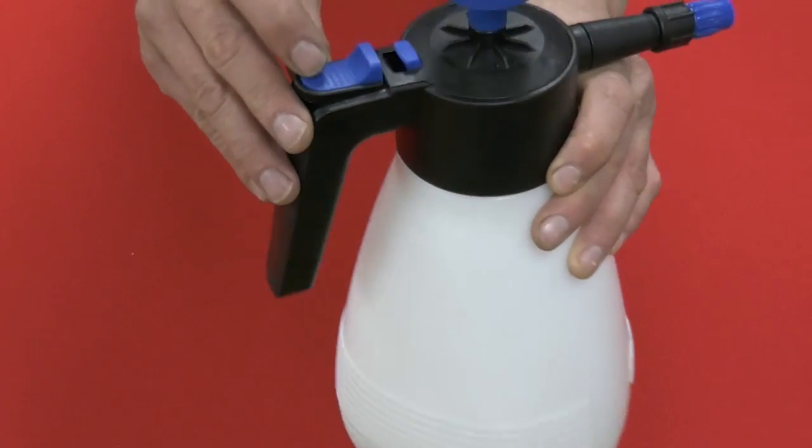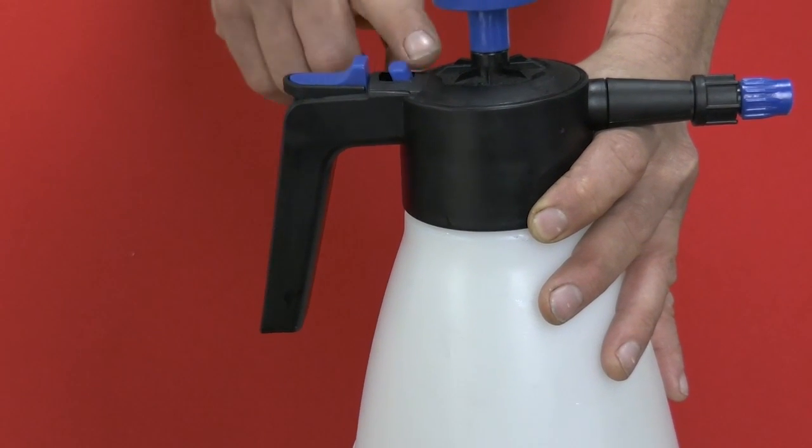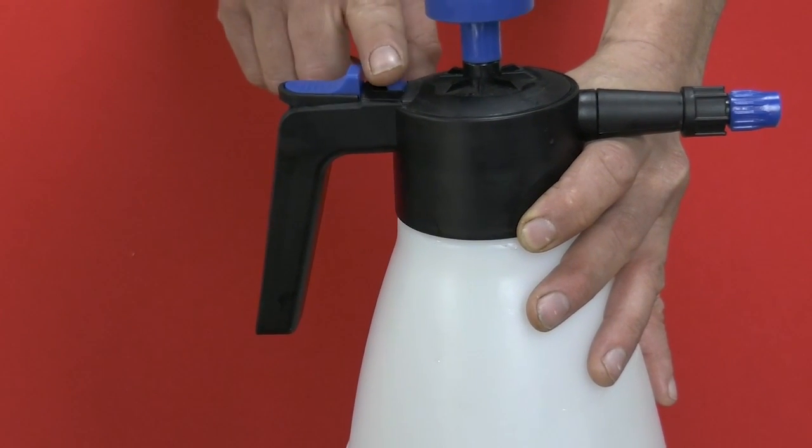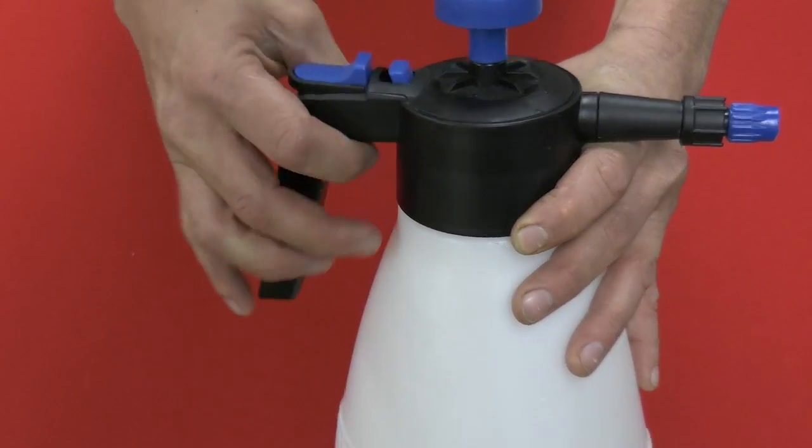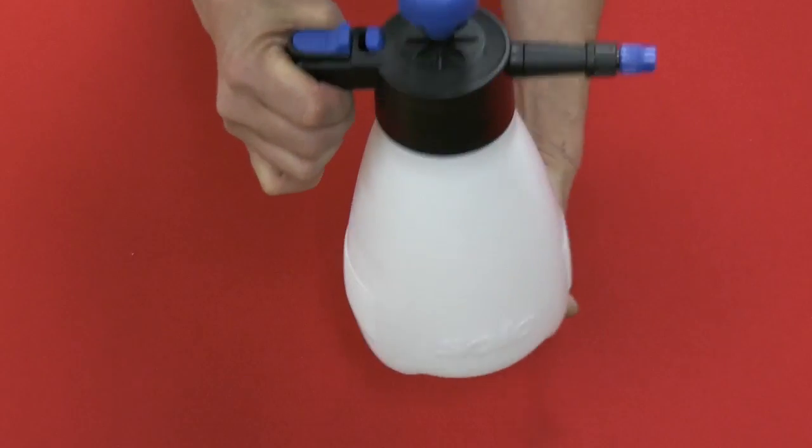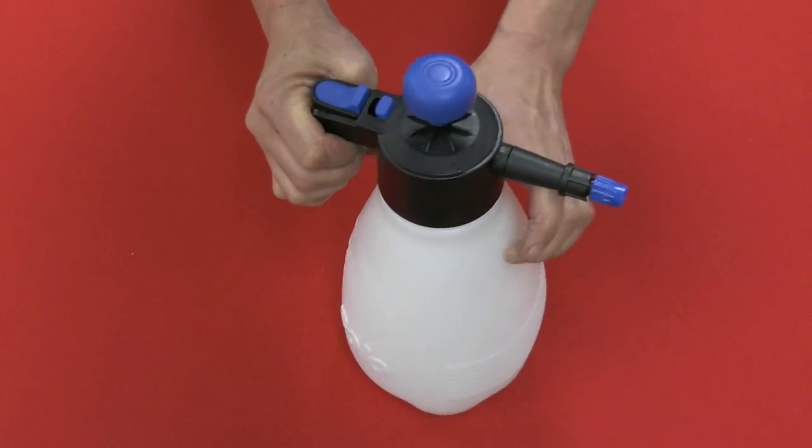Now there's a pressure relief valve. As you see, right in front of the trigger here, there's the pressure relief valve. Now this will automatically engage and you can manually engage it. Of course you want to let all the pressure out of it before you open it up to clean out your product.